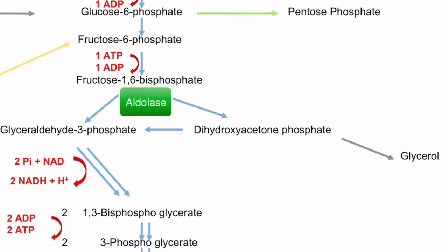Aldolase is the enzyme that breaks apart the fructose 1-6-bisphosphate into its two separate parts. If you recall, the dihydroxyacetone phosphate needs to be turned into glyceraldehyde 3-phosphate, and the enzyme needed for this is TPI. The I stands for isomerase, which usually means changing the form without adding or subtracting any atoms to the molecules.